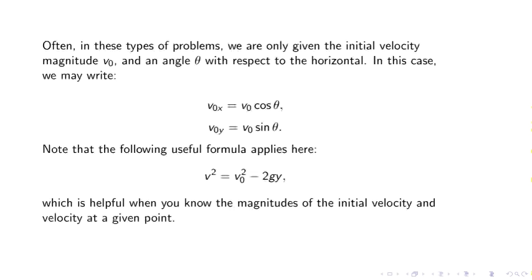Often in these types of problems, we are only given the initial velocity, magnitude v0, and an angle theta with respect to the horizontal. In this case, we may write v0x and v0y. Note that the following useful formula applies here: v squared equals v naught squared minus 2gy, which is helpful when you know the magnitude of the initial velocity and final velocity at a given point.